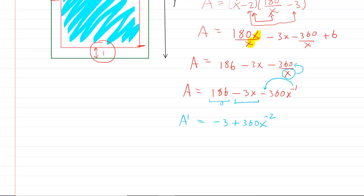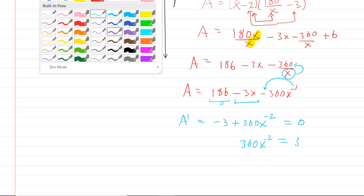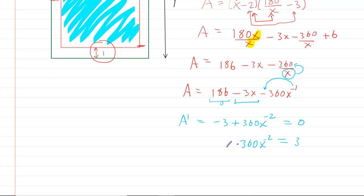Because we subtract 1 from that exponent. So here is the derivative of our area. And in order to find the critical numbers, we would then set this derivative equal to 0. We will add the 3 over to the other side. So we'll have 360X to the negative 2 equals 3.